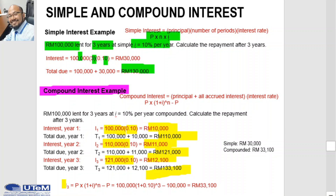Alternatively, we can use the formula to calculate compound interest and get the same result. The total compound interest for this example is RM33,100. That's the difference between simple and compound interest calculations.